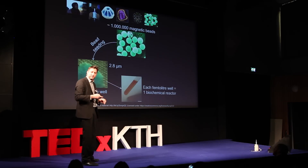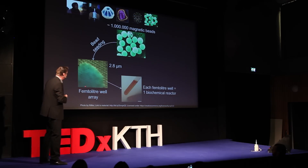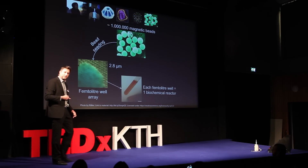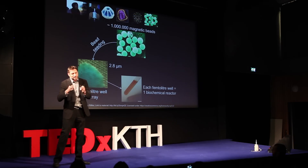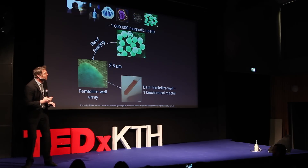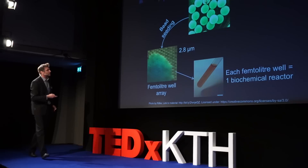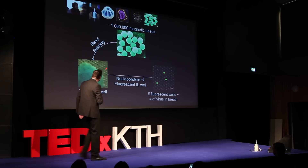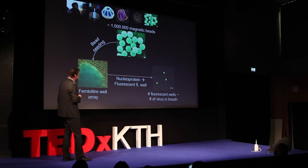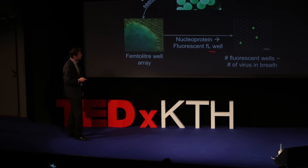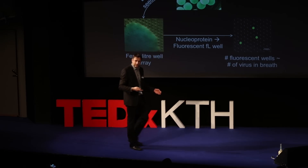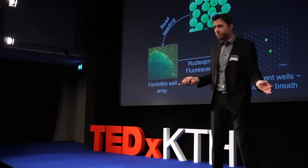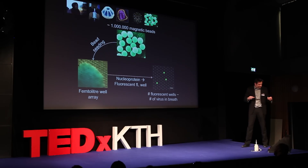Some of these wells have a bead with a nucleoprotein, but most don't — typically only about 1 in 10 beads carries a nucleoprotein. We call these femtoliter wells — a femtoliter is a millionth of a billionth of a liter. Each well acts as a tiny biochemical reactor. The chemistry we do is: if a bead with a nucleoprotein is present, a catalytic reaction turns that well fluorescent. I let it react, then place the well plate under a microscope and simply look at which wells light up and which do not. Every well that lights up has captured a nucleoprotein. I count how many wells light up and calculate back how many viruses were present.